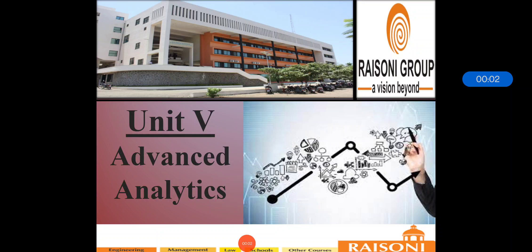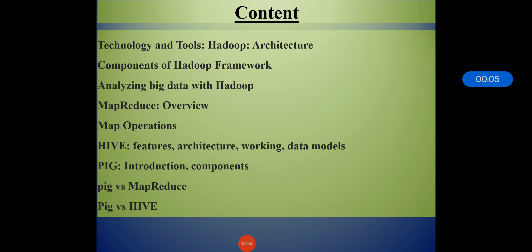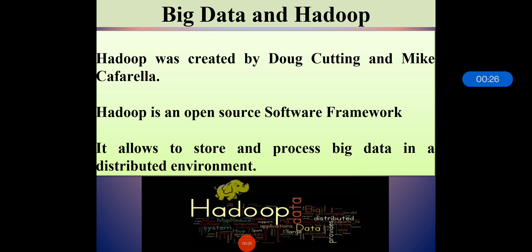Dear students, in this section we are starting with Unit 5, i.e. Advanced Analytics, in which we will be covering the technology and tools: Hadoop architecture, components of Hadoop framework, analyzing big data with Hadoop, MapReduce, its overview and operations, Hive features, architecture, working, and data models of Hive, Pig introduction and components, Pig versus MapReduce and Pig versus Hive.